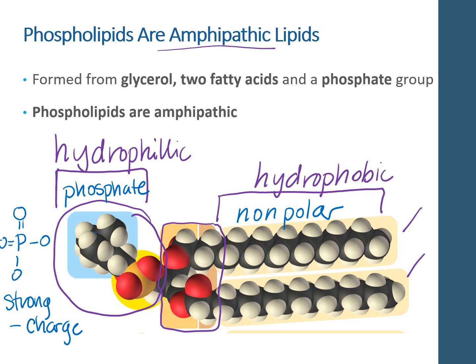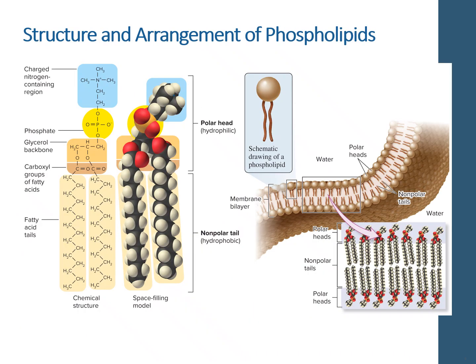Phospholipids are really important because they are the main structural component of our plasma membrane. Here we have a molecular structure of the phospholipid corresponding to the diagram: we've got our phosphate head, our glycerol backbone, and then our fatty acid tails. You can see that hydrocarbon region down below, and up here we've got this very polar, very negative region of our phospholipid.